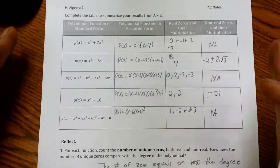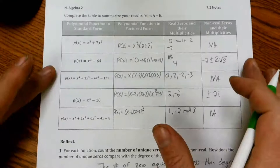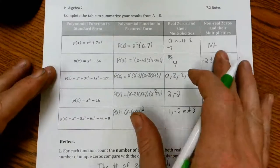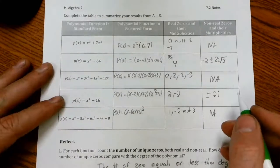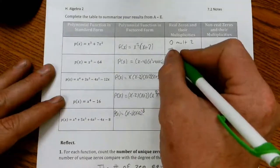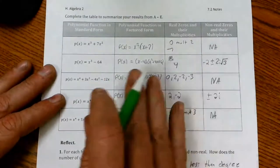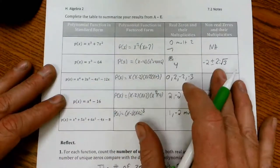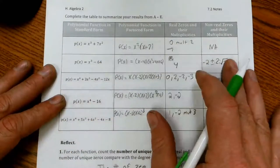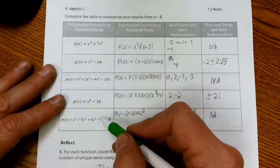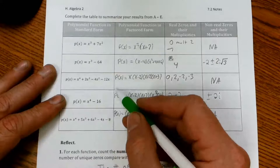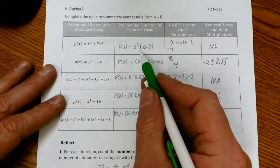Now what I've taken here, and you may want to pause at some point just to write this down because I wrote it down ahead of time, is I've taken all the information we worked through on page one and compiled it here on page two. So these are the five equations we dealt with.